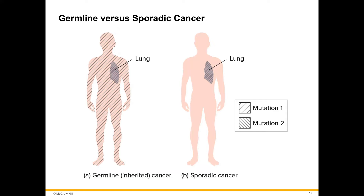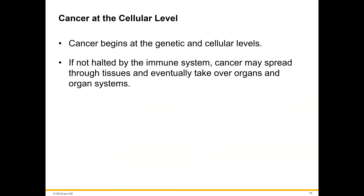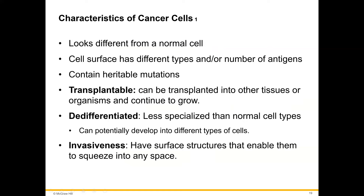A germline mutation affects every cell of the body, whereas a sporadic mutation affects only some cells, like cells of the lung in this example. Cancer begins at the genetic and cellular levels; if not halted by the immune system, it may spread through tissues and eventually take over organs and organ systems.